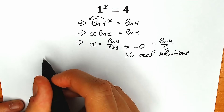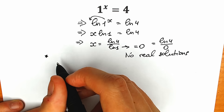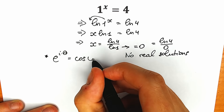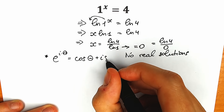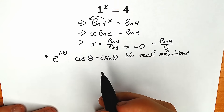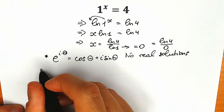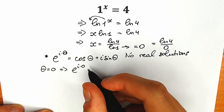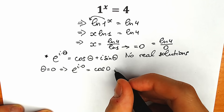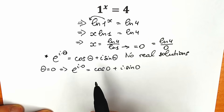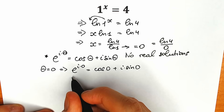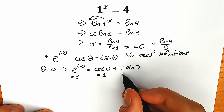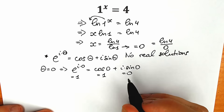First of all, we need to know what is called Euler's identity. This identity looks like: e to the power i times theta equals cosine theta plus i times sine theta. For example, we can easily check it. For theta equal to 0, we have e to the power i times 0 equal to cosine 0 plus i times sine 0. E to the power 0 equals 1, and cosine 0 equals 1 as well, and sine 0 equals 0. So it's a completely correct expression — this is our Euler's identity.